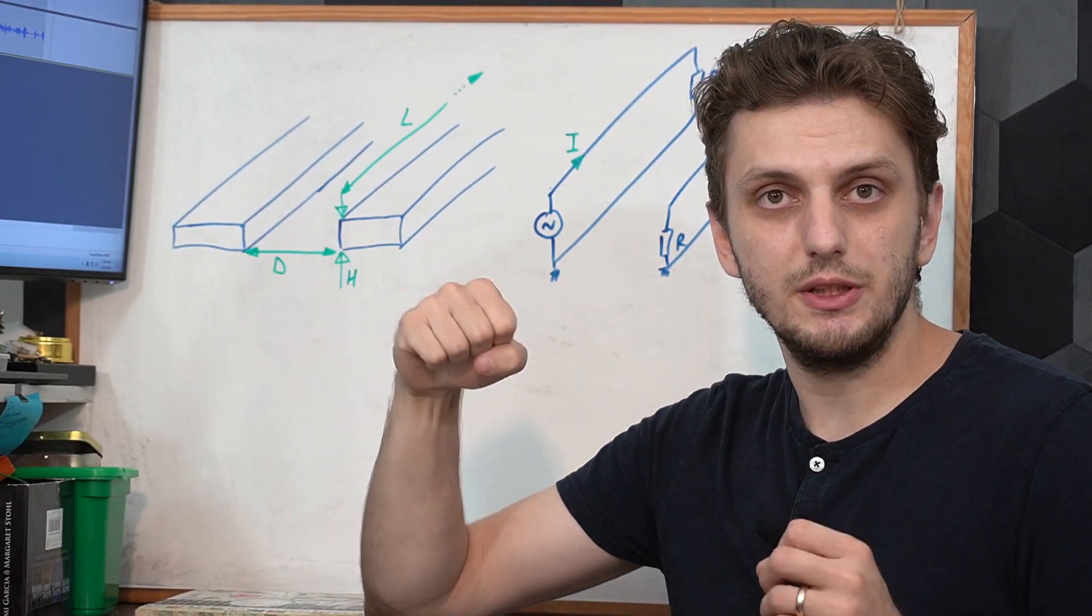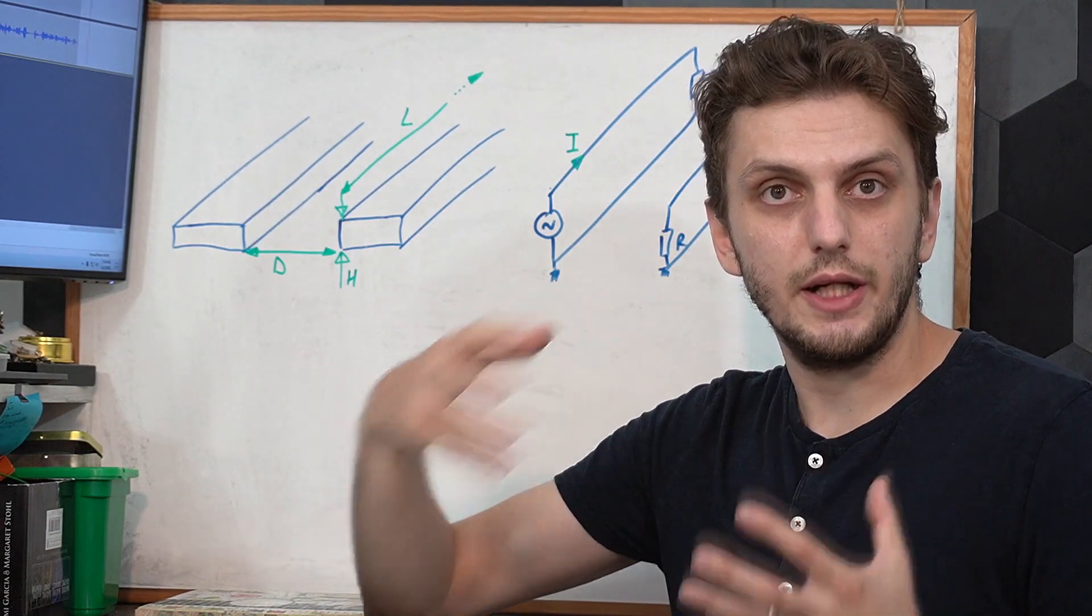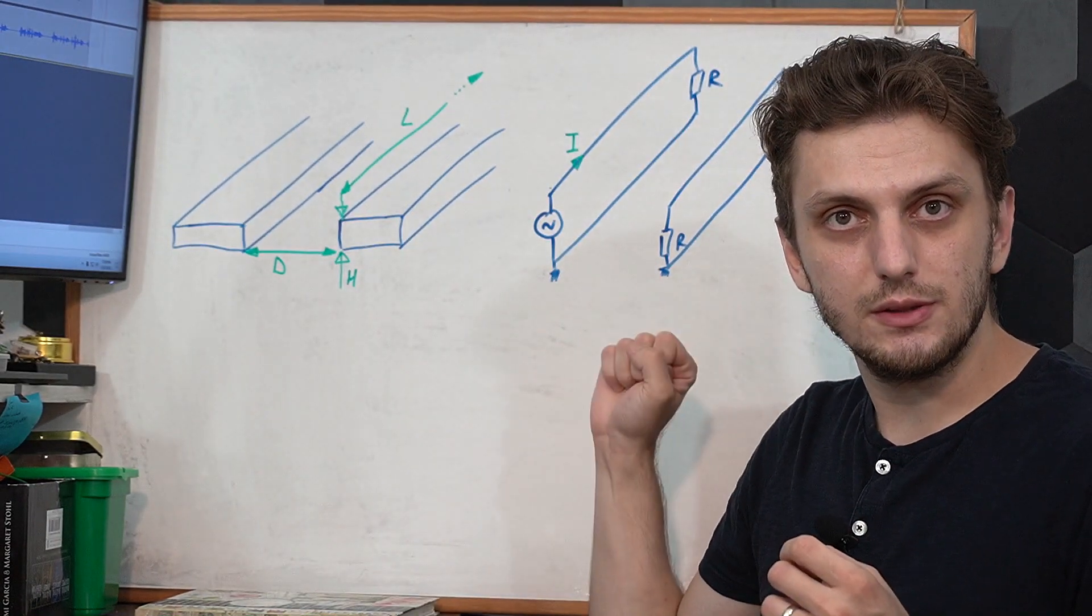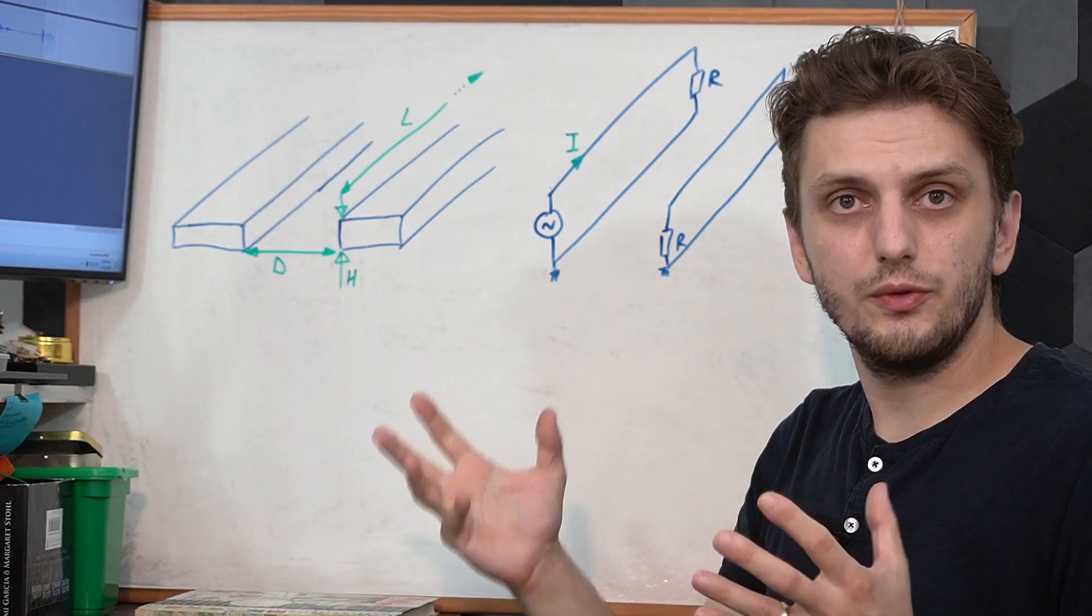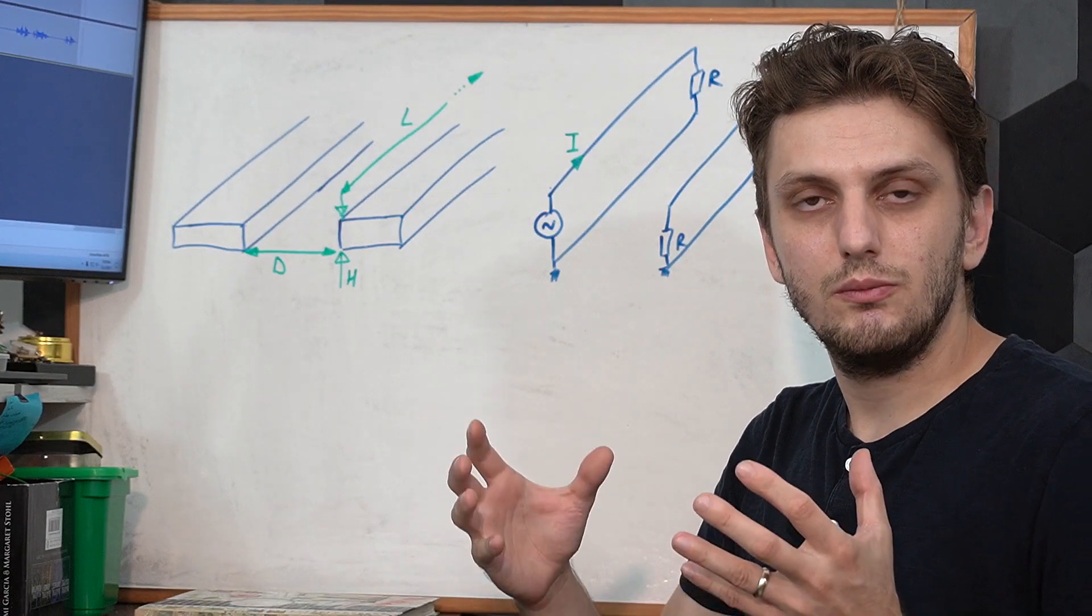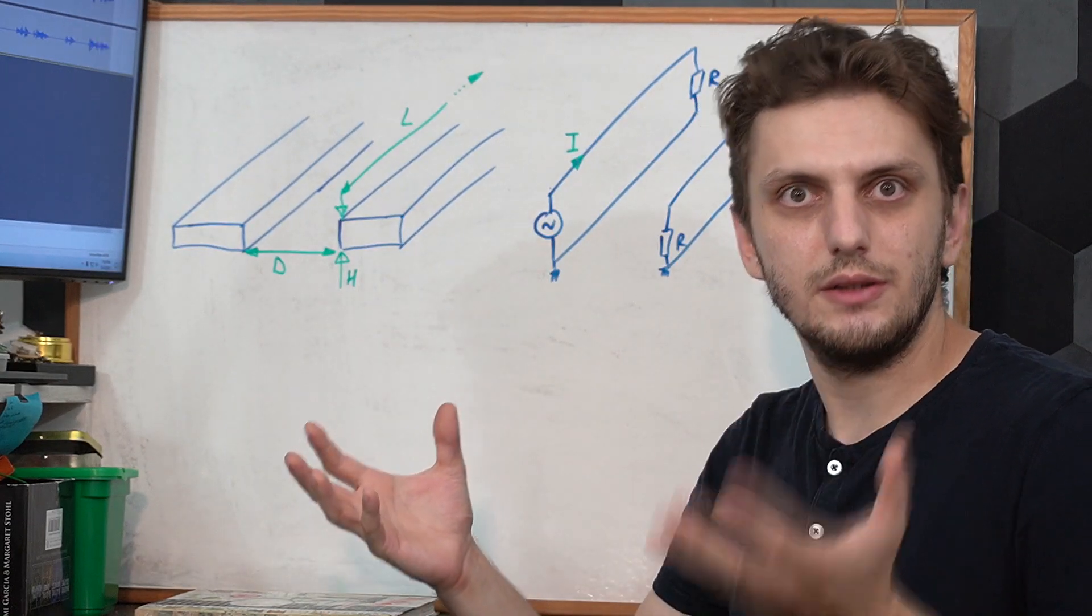On the other hand, if we would have much lower impedance traces, so traces with higher currents, then most of the coupling would happen through magnetic fields. Now in reality, both of these happen at the same time. It's just that, depending on the system, one is more predominant than the other.